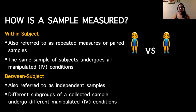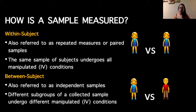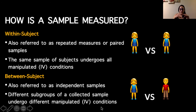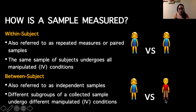In contrast, a between-subjects design is where different people undergo each condition — also referred to as independent samples because the samples are independent of one another. The most obvious example is males versus females. Sometimes it could be different age groups or different sports. In between-subjects studies, you're looking at differences between two independent samples. Each group undergoes its own manipulated condition, or one group might be a control group and the other an experimental group.